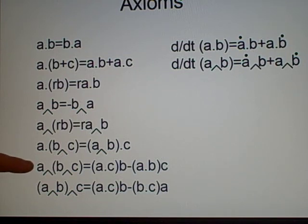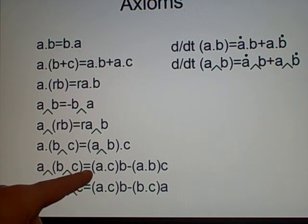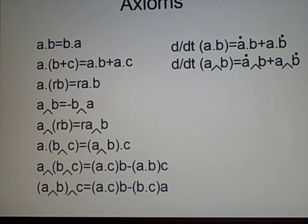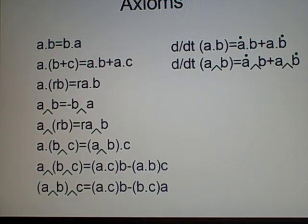And this one here is the vector triple product. Now, we have to be careful. We have a cross (b cross c) equals (a dot c) times b minus (b dot a) times c. And down here as well, a cross (b cross c). Now, they're not the same. It is (a dot c) times b minus (b dot c) times a.